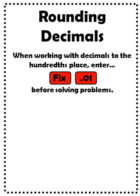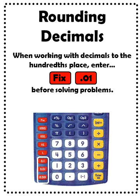The rounding function can also be used with decimals. Students in fourth and fifth grade often work with decimals only to a given place. For example, in fourth grade, students typically work with hundredths. So when working with decimals to the hundredth place, teachers can enter 6, one hundredth, before solving problems. Then when students solve problems, they will automatically be rounded to the place that they were working with. This is especially useful when dividing with decimals.